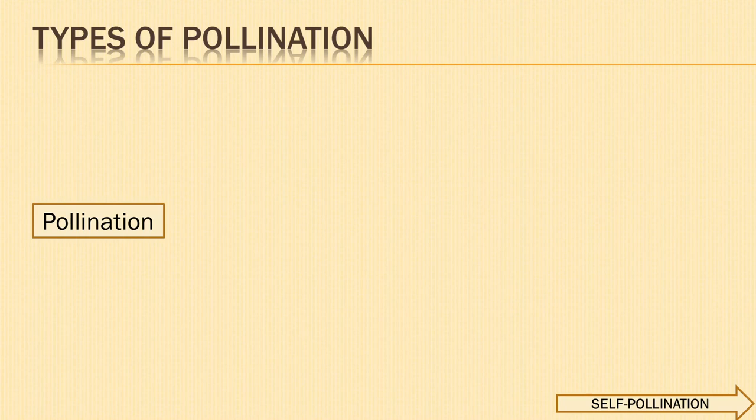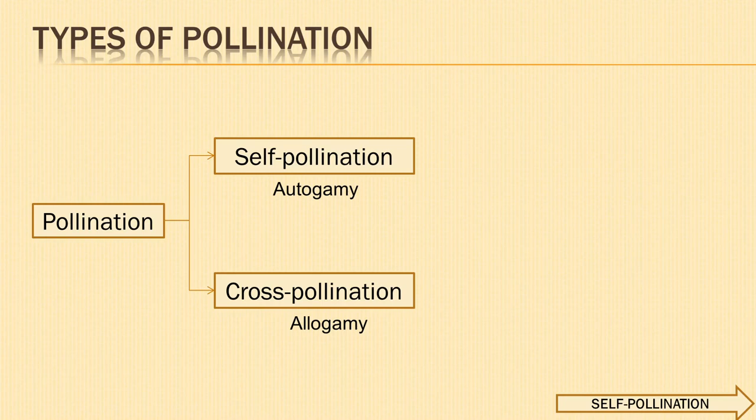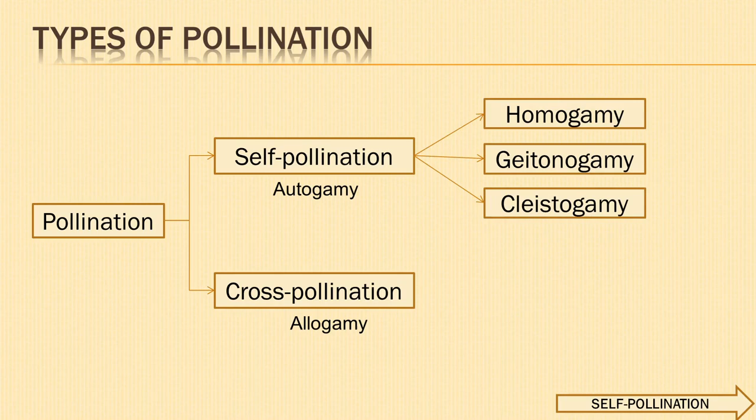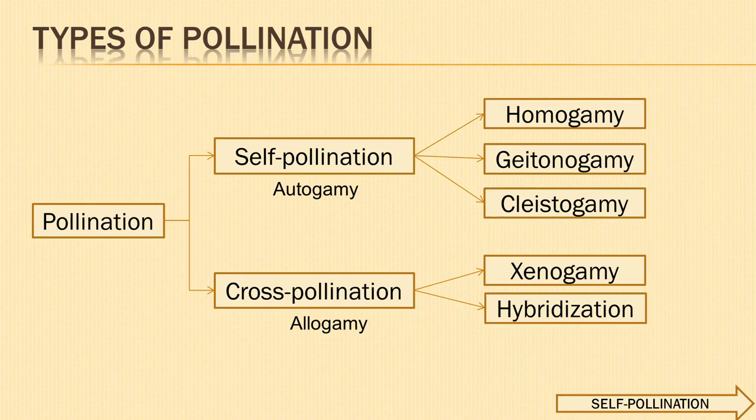Pollination is of two types: self-pollination or autogamy, and cross-pollination or allogamy. Self-pollination can be further subdivided into homogamy, geitonogamy, and cleistogamy. Cross-pollination can be studied under two headings: xenogamy and hybridization. We will understand the terms one by one with examples.